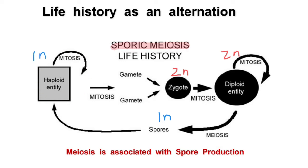These fully grown haploid plants cannot undergo meiosis because they only have one set of chromosomes, so they cannot do any type of recombination. Through the process of mitosis, they produce gametes, which are basically unicellular clones of the haploid organism. So gametes are also haploid, and different gametes, which are genetically different, would fuse into a zygote.